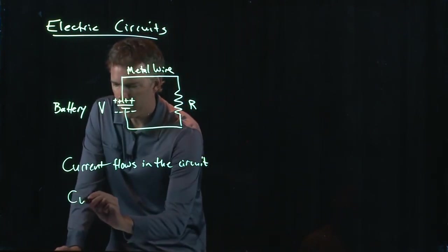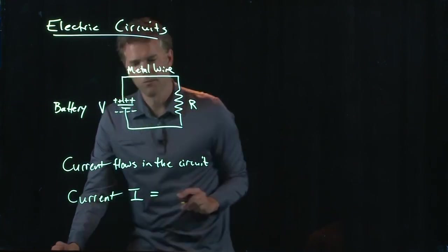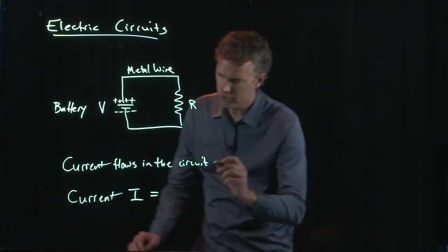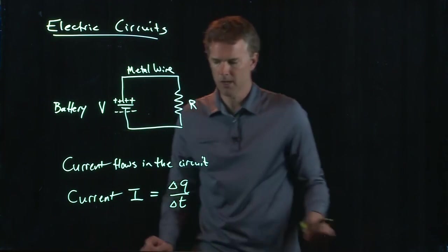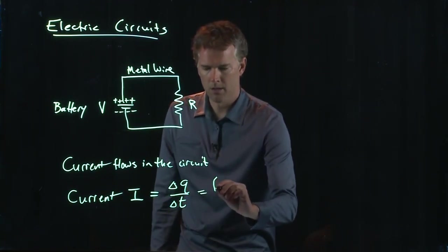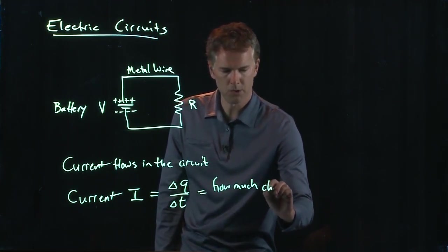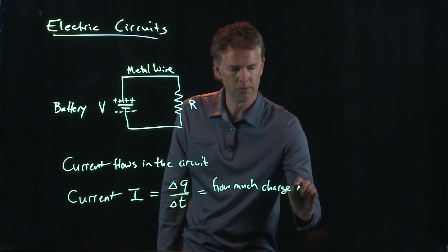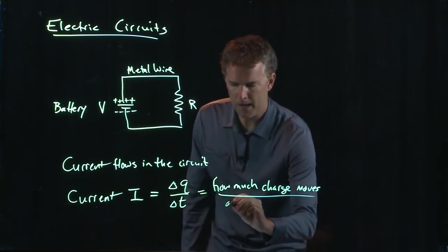But what is this current? Current I, we write it with a capital I, is just how much charge you move in how much time. It's delta Q over delta T. How much charge moves in a given amount of time.